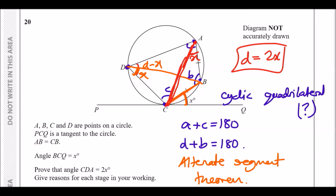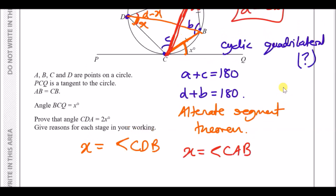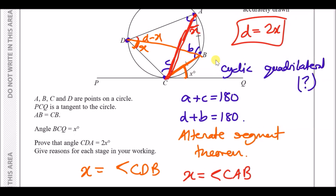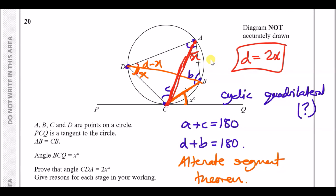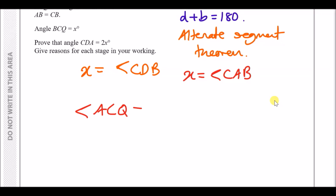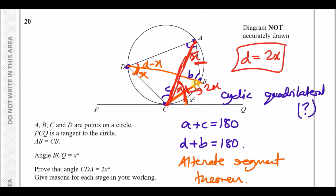Now we have angle x appearing in triangle CAB. Since AB equals CB — marked by the tick marks — the triangle is isosceles, meaning the base angles are equal. So the angle at A is also x. The combined angle ACQ therefore equals x plus x, which is 2x.